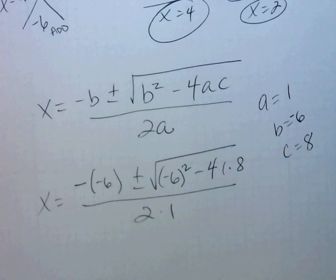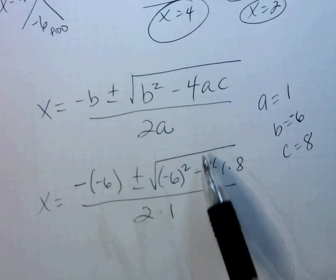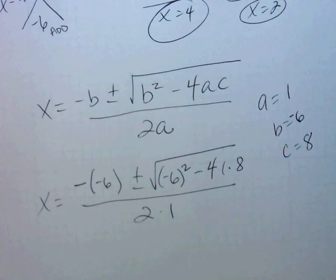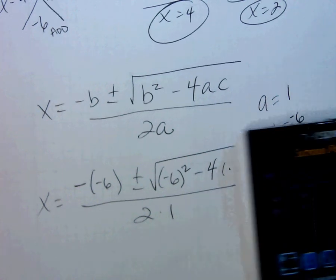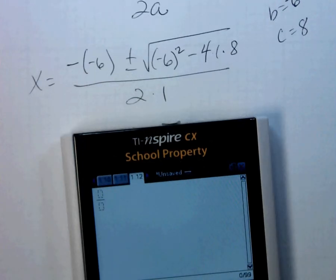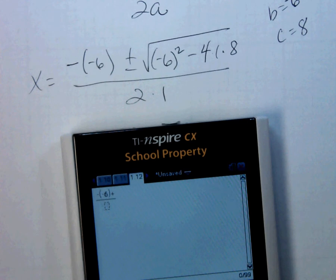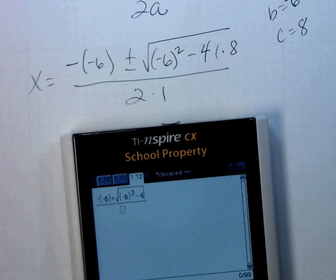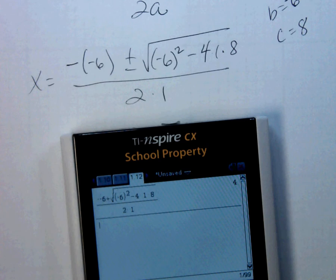And you can use your calculator to get the answer for this if you can't do it by hand. Which is control divide, open parenthesis, negative then open parenthesis negative 6, plus the square root of negative 6 and then square on the outside, minus 4 times 1 times 8 all over 2 times 1, and I get 4.